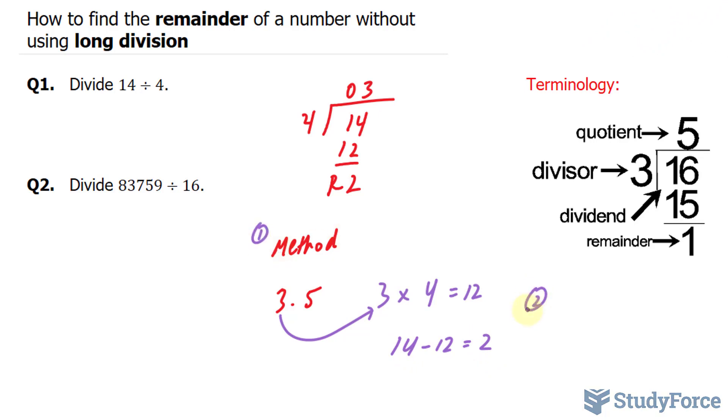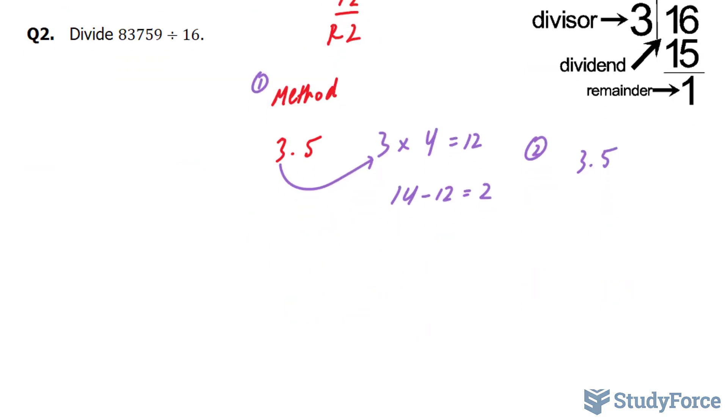In the second method, the first step is the same. Use your calculator, you end up with 3.5. And then you take your answer of 3.5 and subtract it from the integer part of your answer. So 3.5 minus 3, that gives you 0.5.